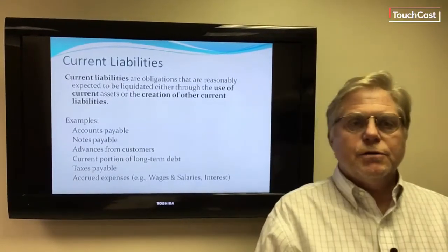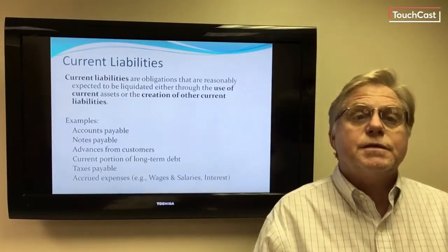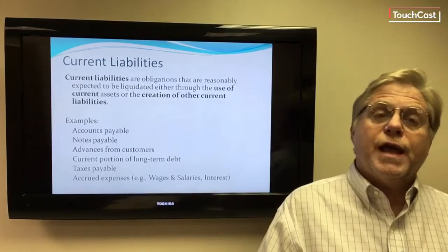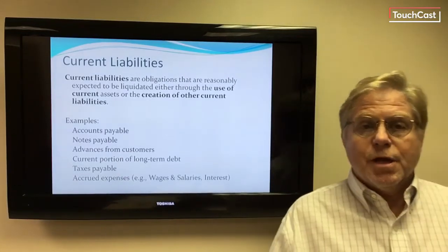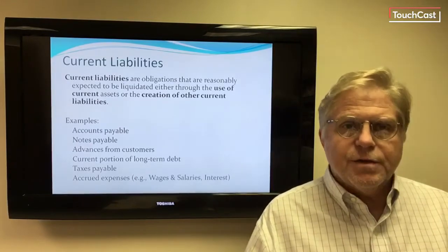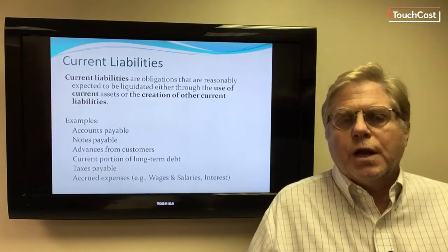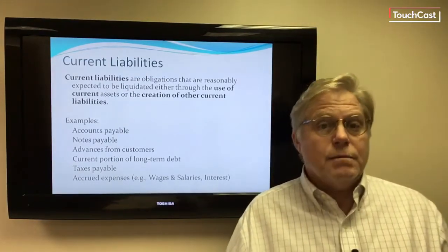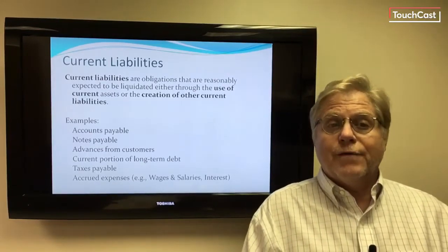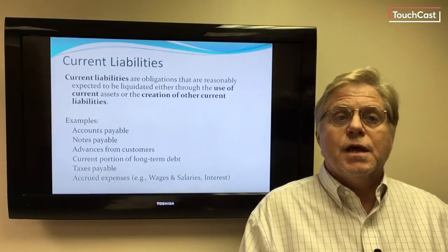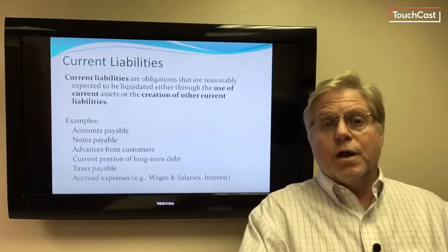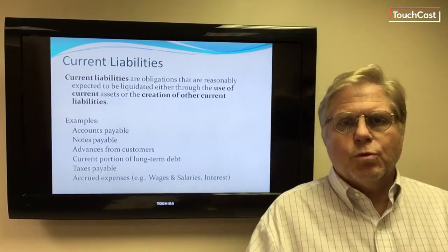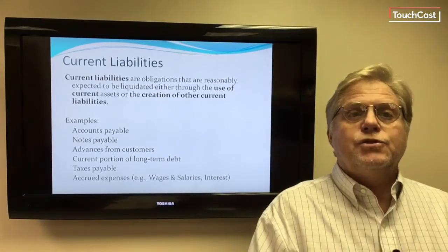Turning now to liabilities — current liabilities are obligations that are reasonably expected to be liquidated either through the use of current assets or the creation of other current liabilities. A working definition is that current liabilities are obligations that come due within one year, which is true most of the time. But the more technically correct definition, which we'll cover in more detail next semester, is the one stated here.